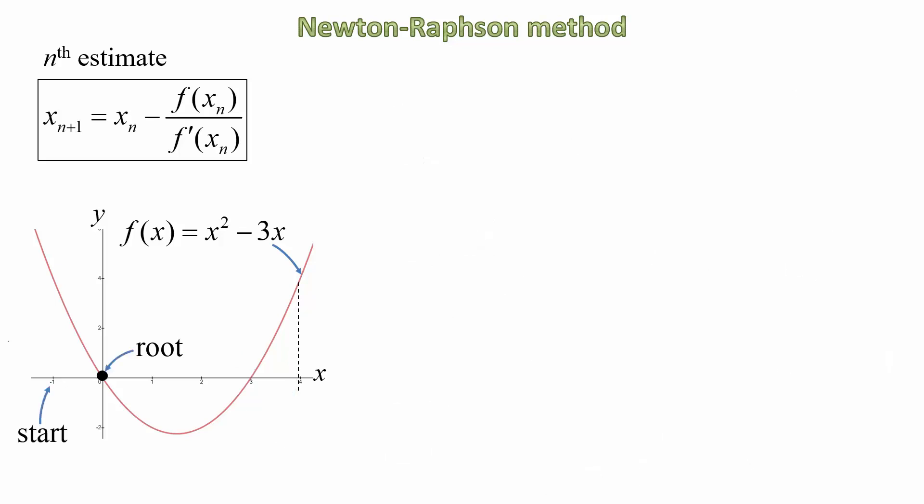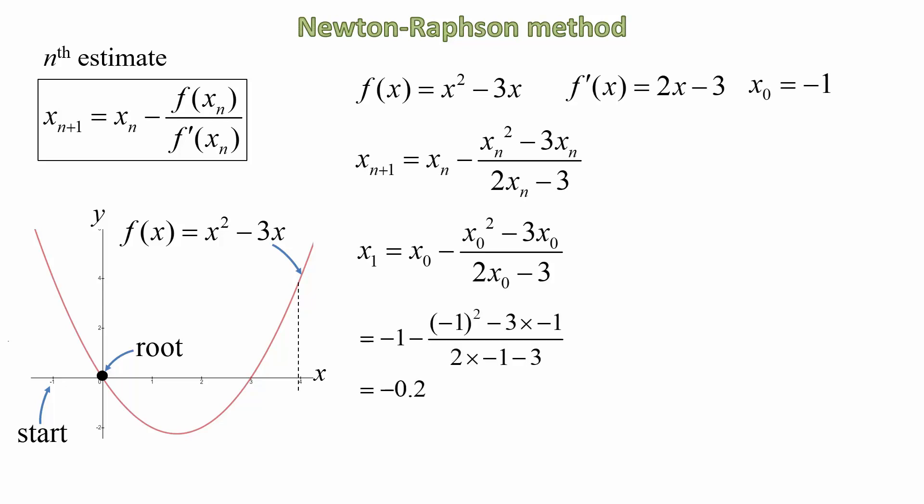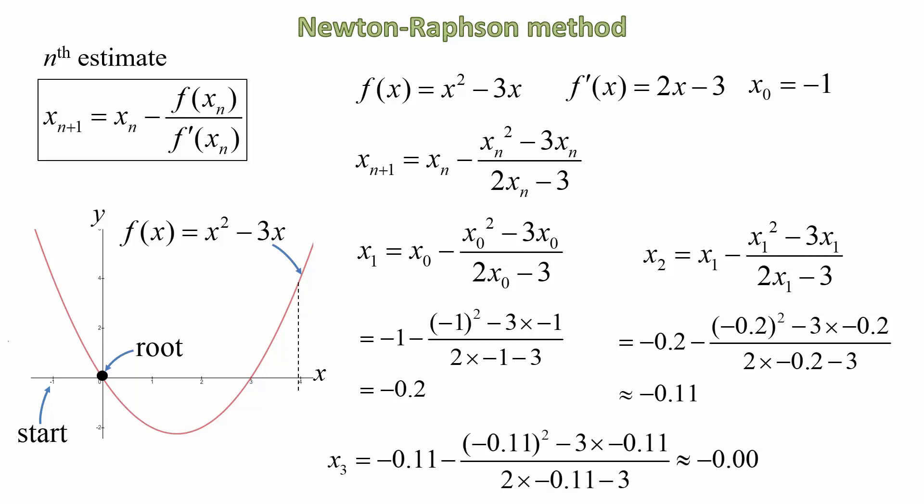Now let's find the other root, which is x = 0. We can use a start value of -1. So our first estimate, x₁, will be -0.2. Our second value, x₂, comes out to be approximately -0.11. And our third value, our third iteration, is quite accurate, approximately 0. So again, after just two iterations, the method has zeroed in on the 0, if you pardon the pun.